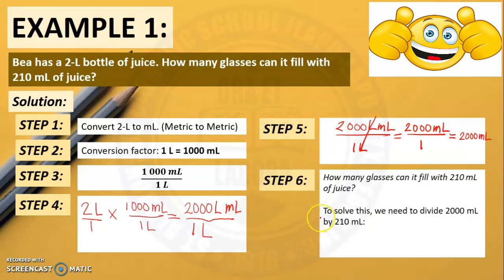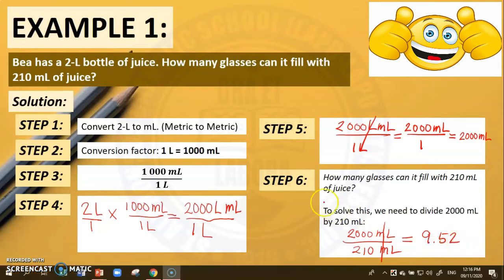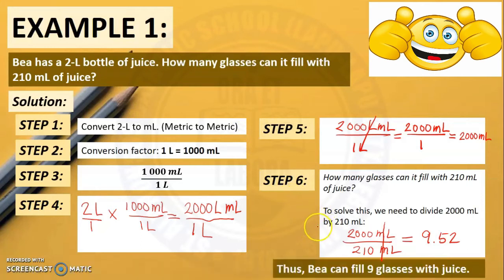For the last step, step 6: We need to answer the problem. What is asked is how many glasses can it fill with 210 milliliters of juice? To solve this, we divide 2,000 milliliters by 210 milliliters and cancel the same units. Since we are talking about glasses, our answer should be a whole number. Thus, Bea can fill 9 glasses with juice.